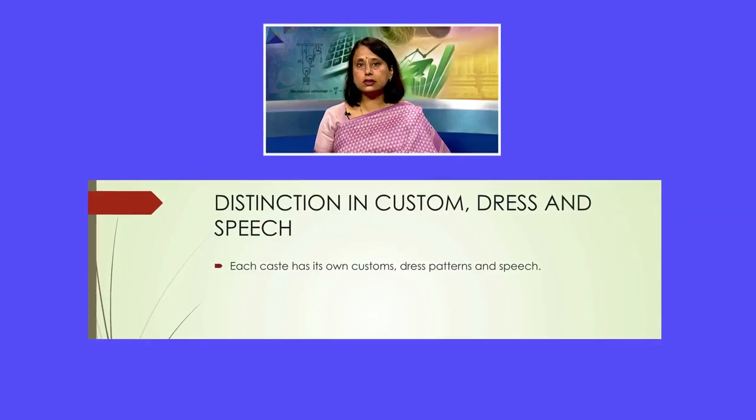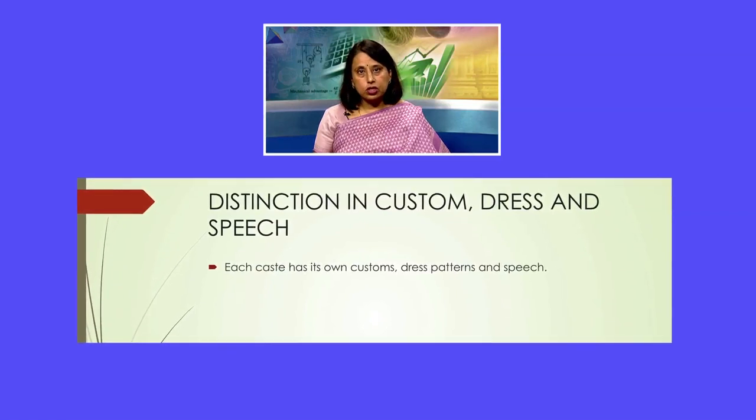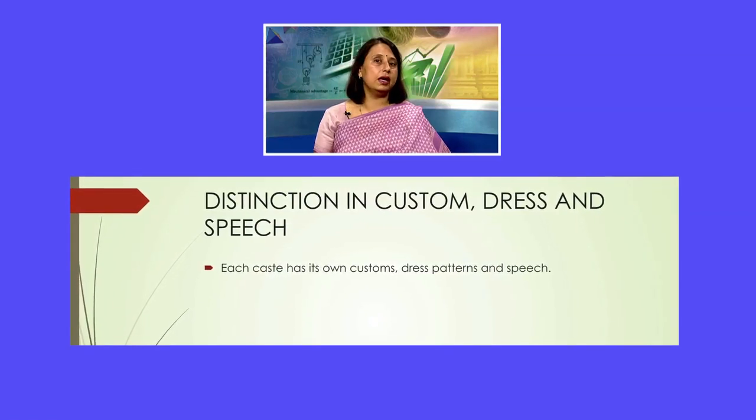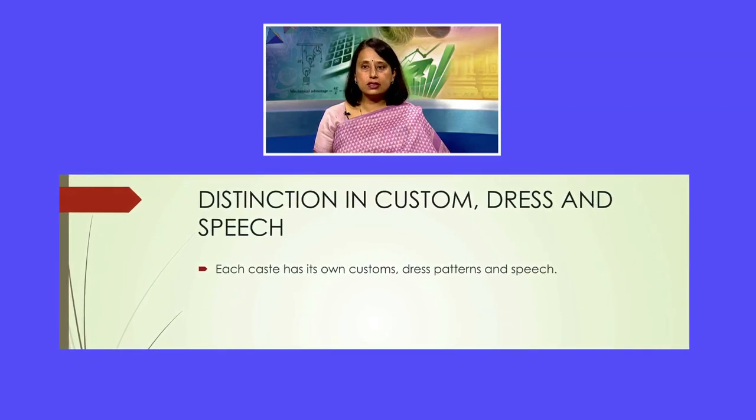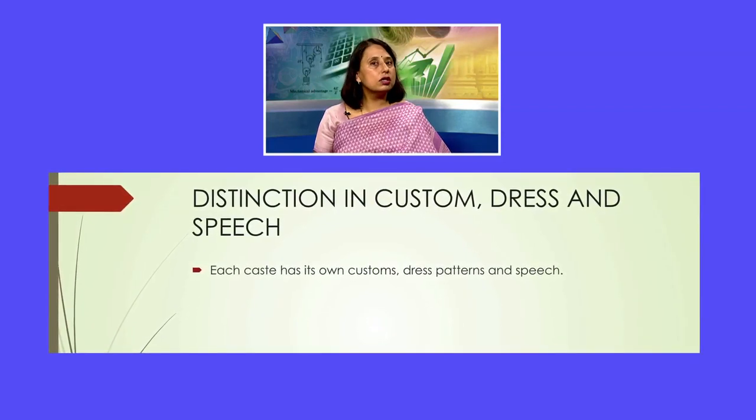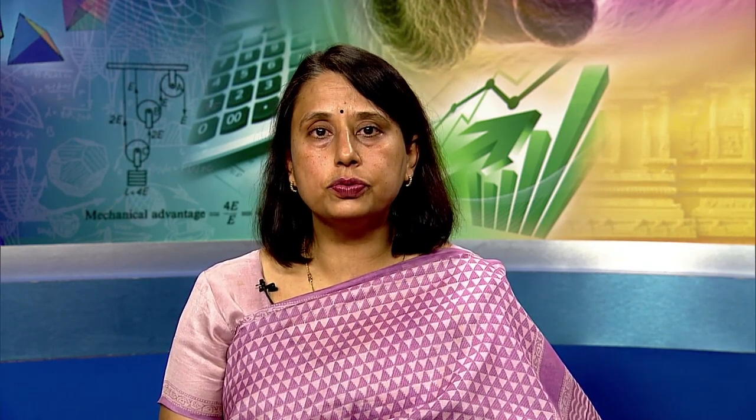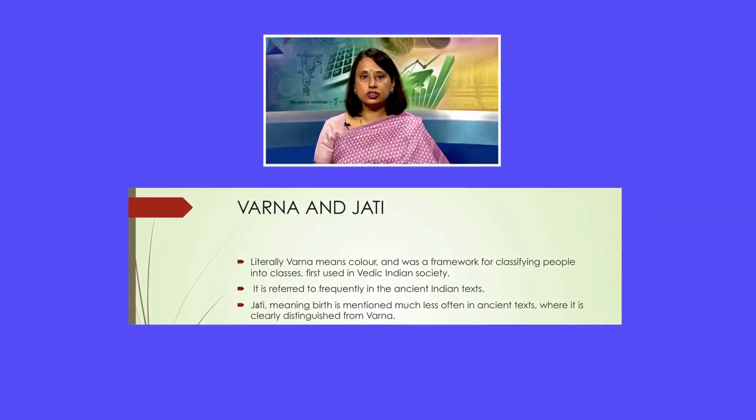Each caste group had its own customs, dress patterns, and speech, making it easy to identify which caste a person belonged to. For example, different caste groups wore their sarees and dhotis in different ways. Since lower castes were not allowed to wear ornaments, the presence of ornaments indicated membership in a higher caste group.